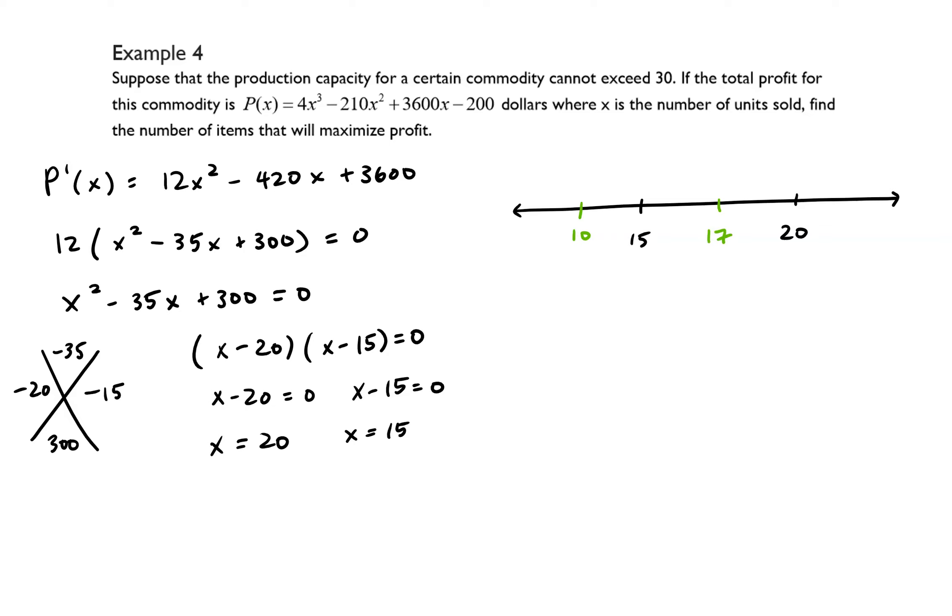So if I were to evaluate p prime of 10 we get 12 times 10 squared minus 420 times 10 plus 3600, and that's going to equal 1200 minus 4200 plus 3600, and that's going to equal 600, and that's positive.